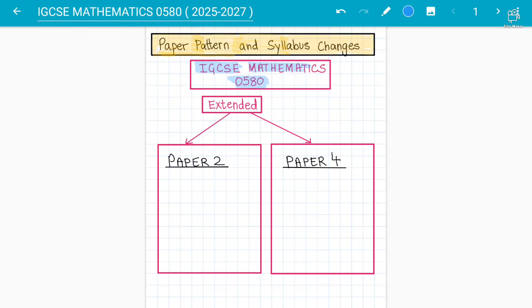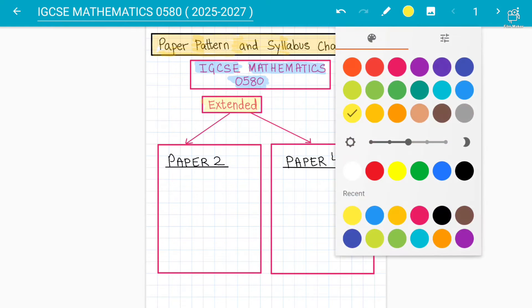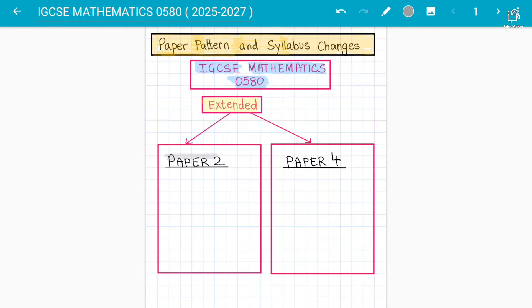If students understand the extended are basically Paper 2 and Paper 4. We'll make a separate video on core later on, but this is about Paper 2 and Paper 4 for IGCSE Mathematics 0580. This syllabus will be applied from 2025 till 2027, from May-June 2025 session till 2027.